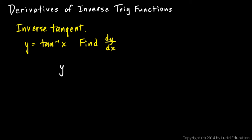So here's how we'll do it. We'll start with what we're given: y equals inverse tangent of x. And we simply take the tangent of each side. So the tangent of the left side gives us tangent y, and the tangent of the right side gives us x, because the tangent of the inverse tangent of x is just x. So we have tangent of y equals x.